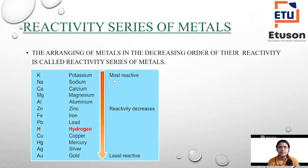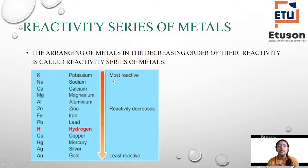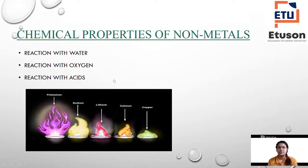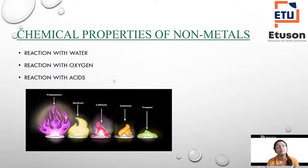Whenever you are asked about the reactivity series of metals you have to arrange them in decreasing order, from the most reactive metal to the least reactive one. The most reactive metal is potassium and the least reactive metal is gold. You have to remember this table because questions can come as MCQs, one mark, or fill in the blanks asking which is the most reactive metal and which is the least reactive metal.